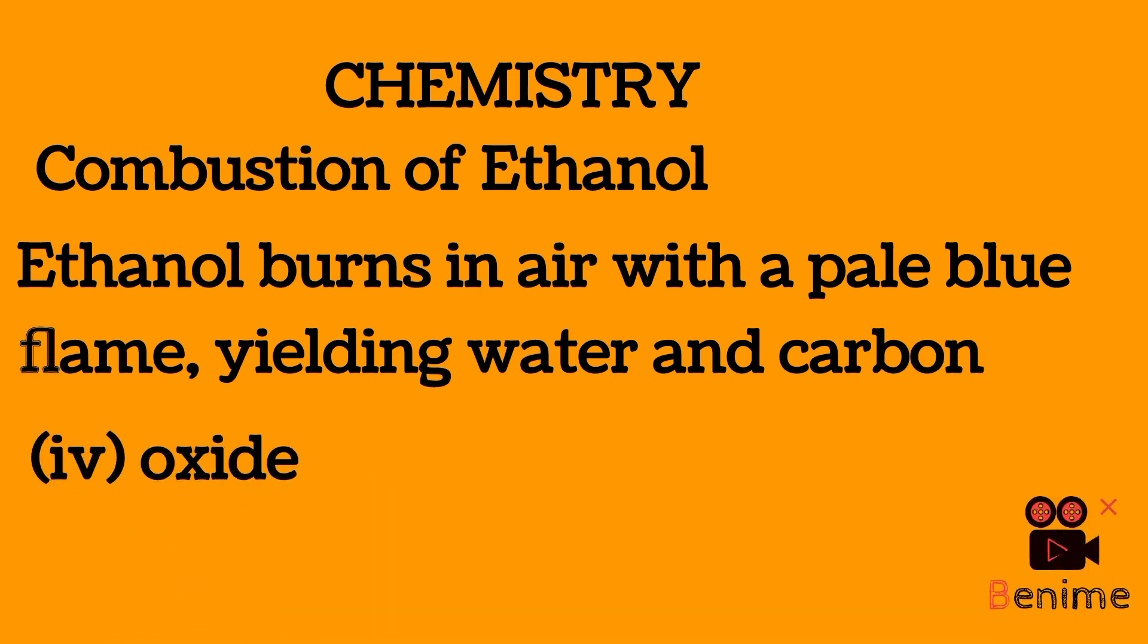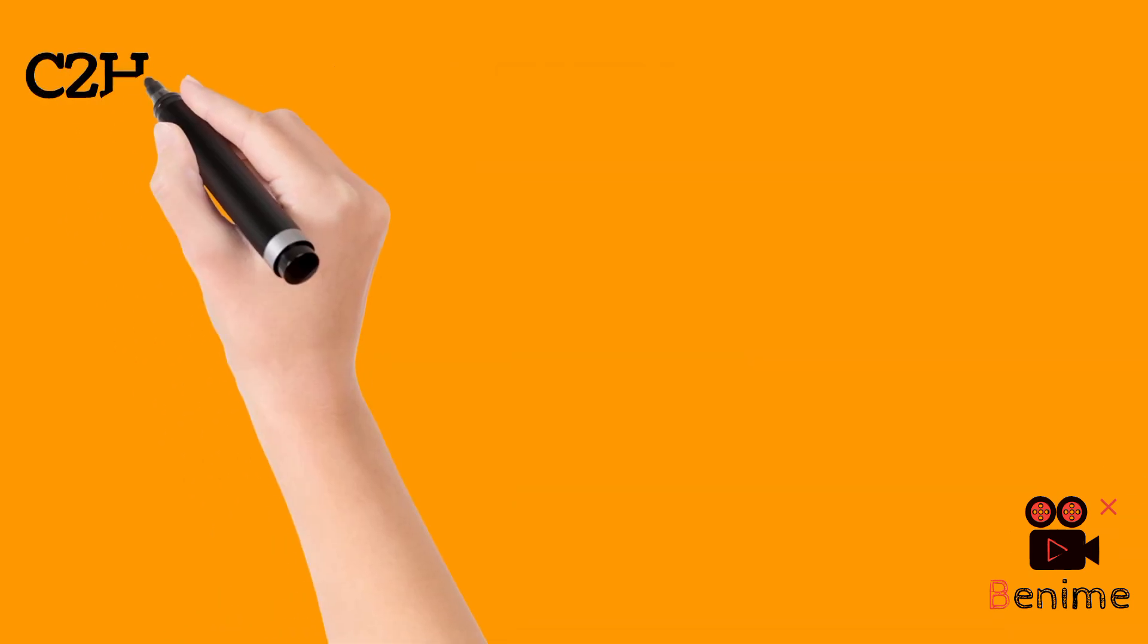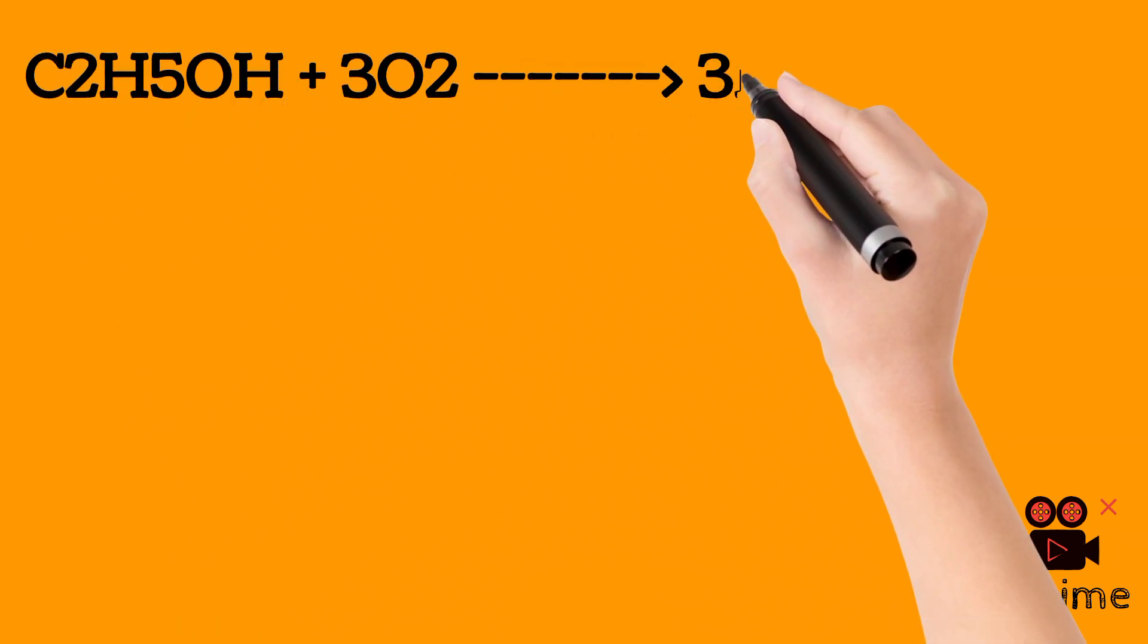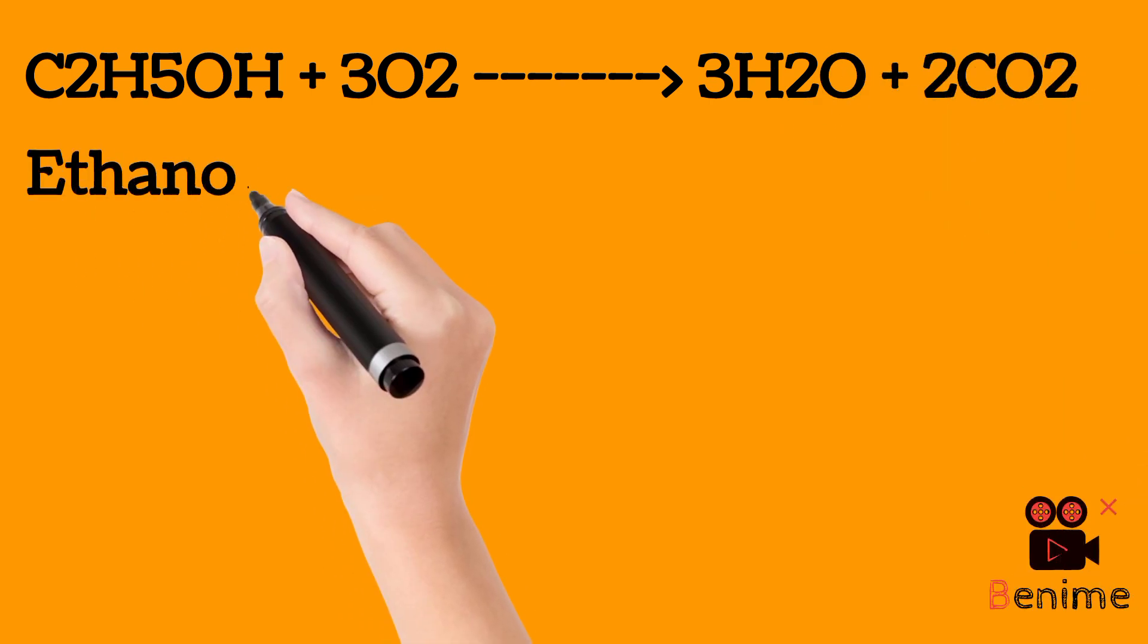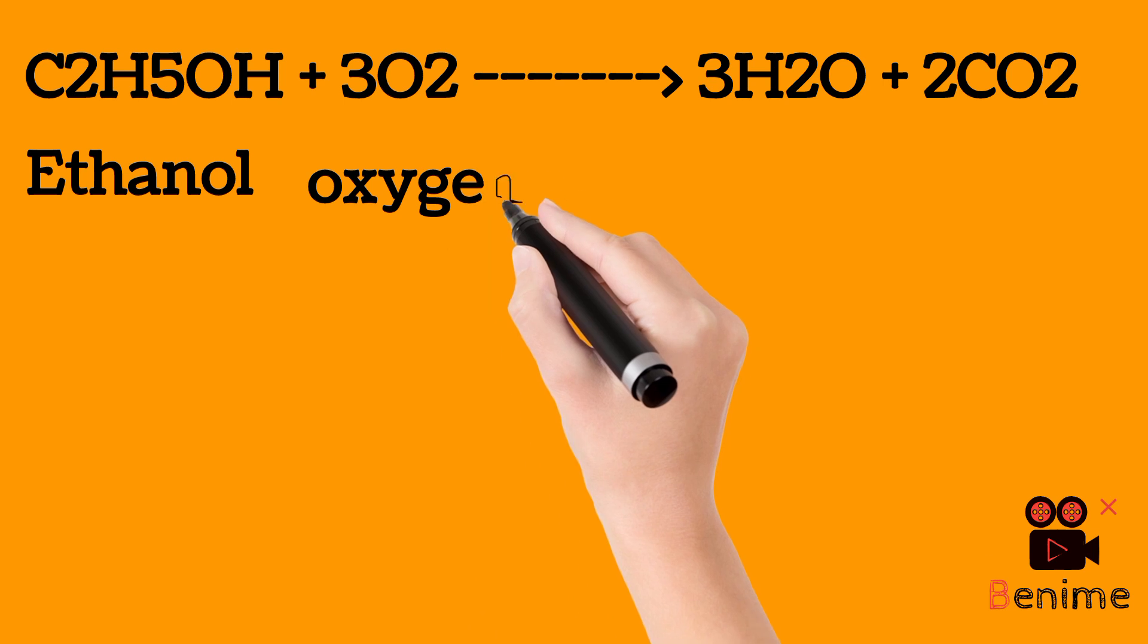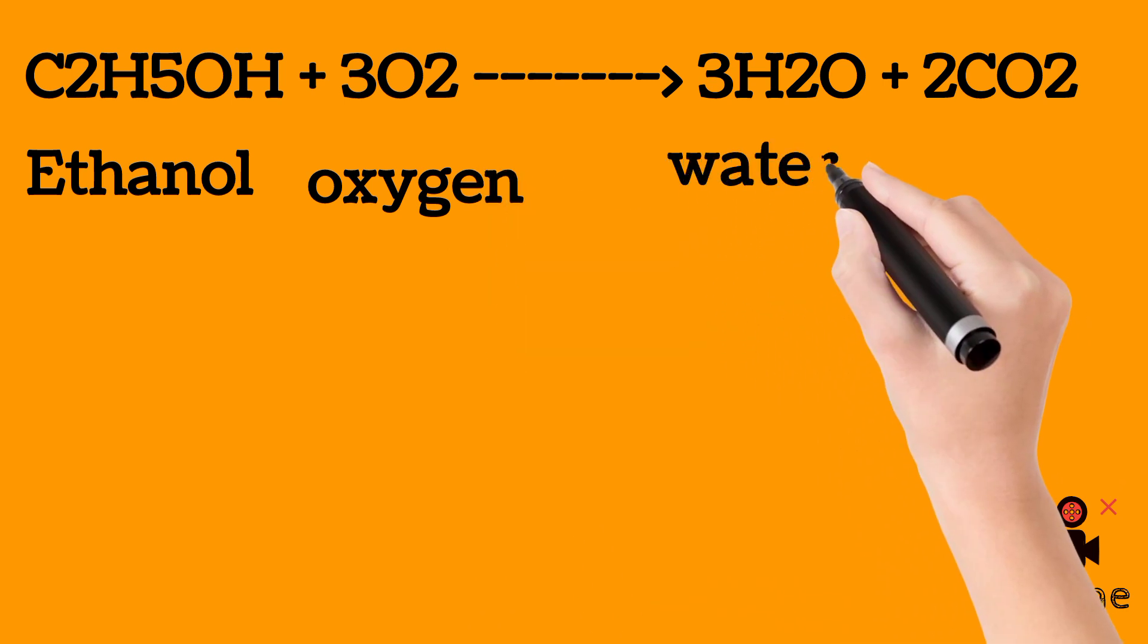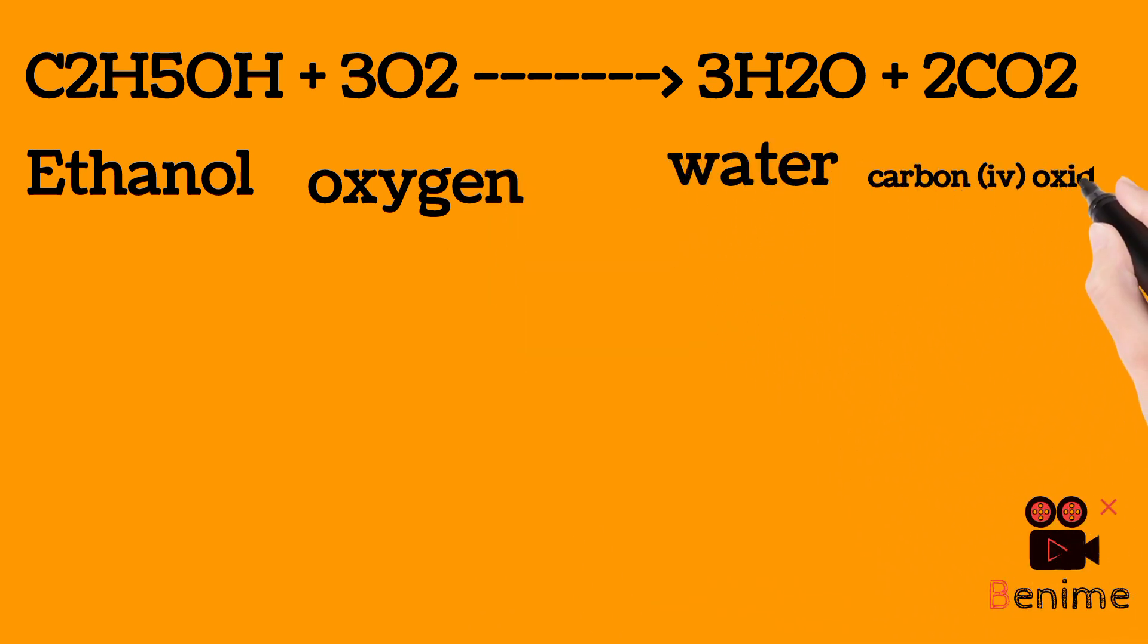So during the combustion of ethanol, the two products you see is carbon-4 oxide and water. So you see ethanol on the left reacting with oxygen to form water and carbon-4 oxide. That is ethanol, oxygen, the product, water and carbon-4 oxide.